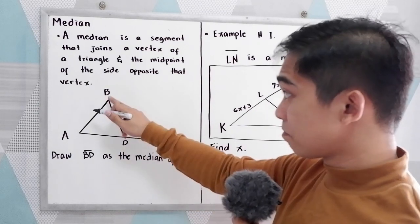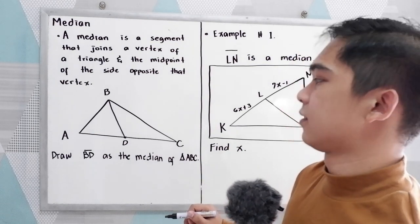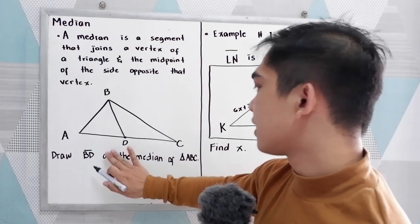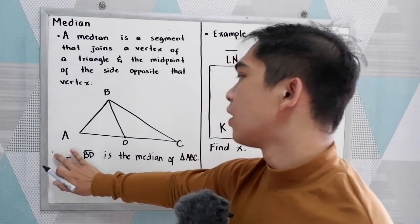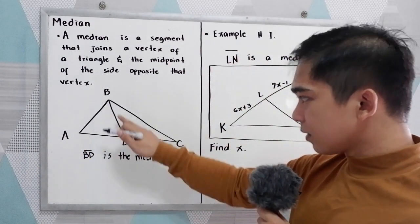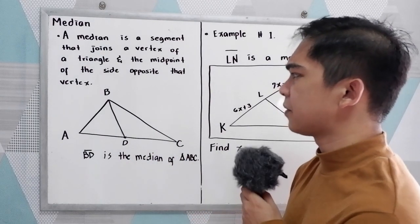So we need to connect the vertex going to the midpoint. Now BD is the median of triangle ABC. We can now conclude that segment BD is the median of triangle ABC.